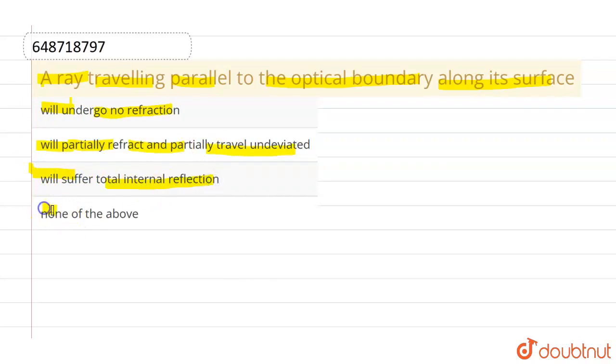Total internal reflection and the last given option is none of the above. Now let us suppose this is the optical boundary, and the refractive index on the left hand side of optical boundary is n1 and on the right hand side of optical boundary is n2.